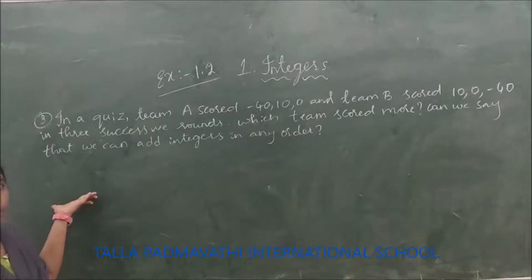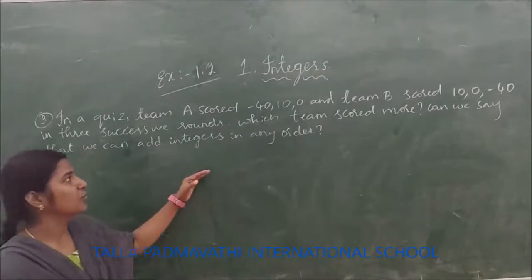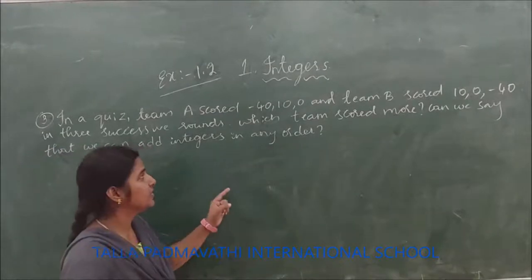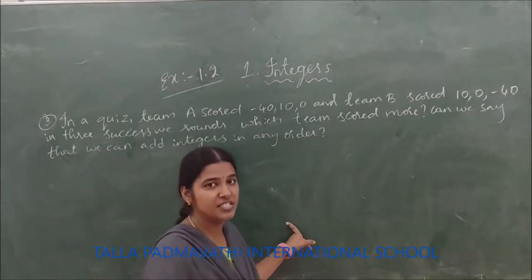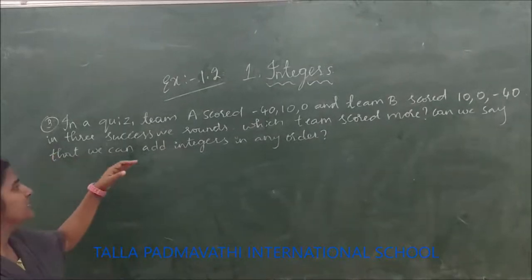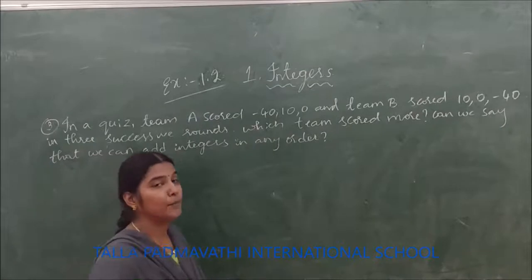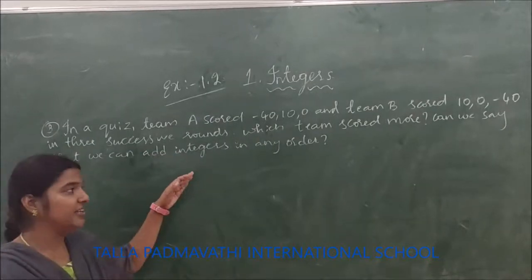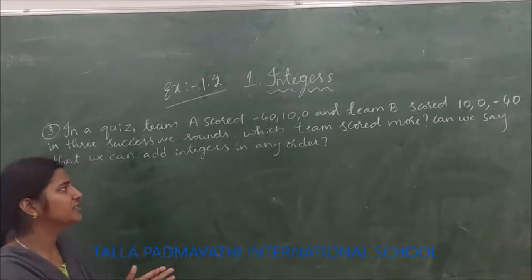Now let us see the third problem. In a quiz, team A scored minus 14, 10, and 0, and team B scored 10, 0, and minus 14 in three successive rounds. Which team scored more, and can we say that we can add integers in any order? Let us see team A first.